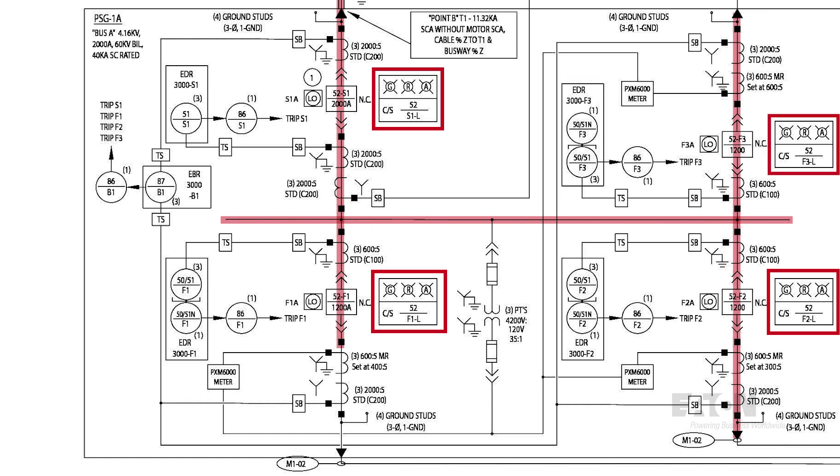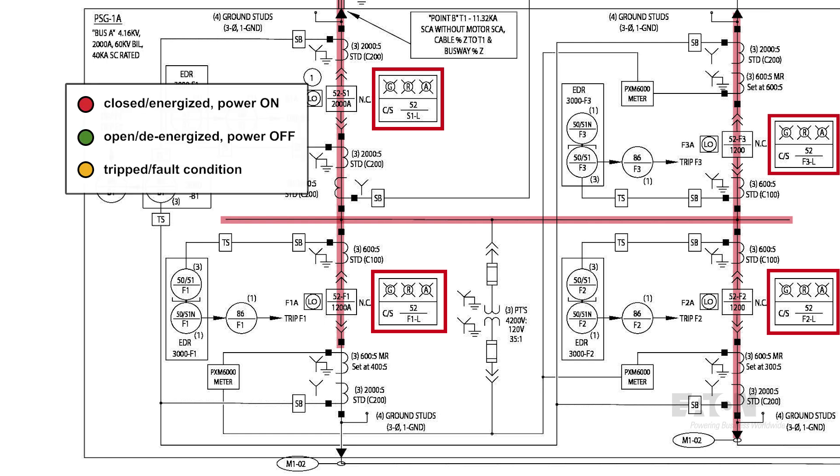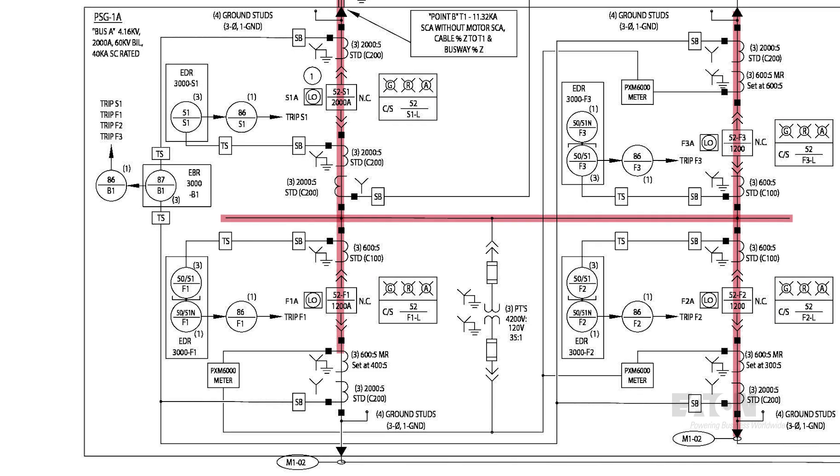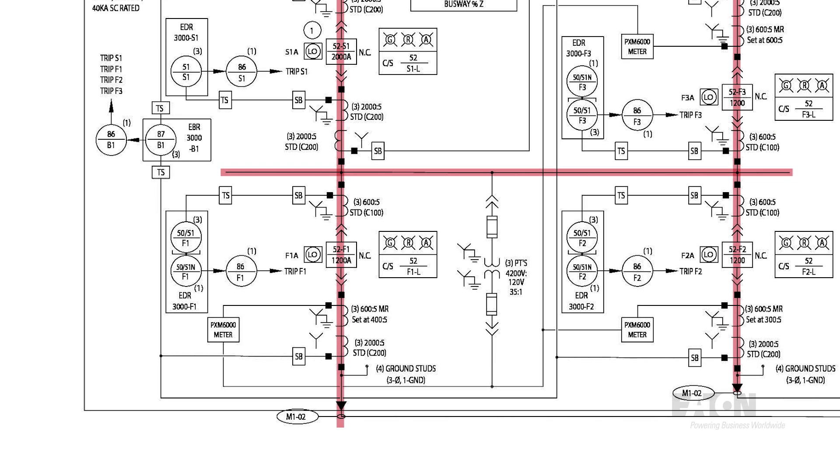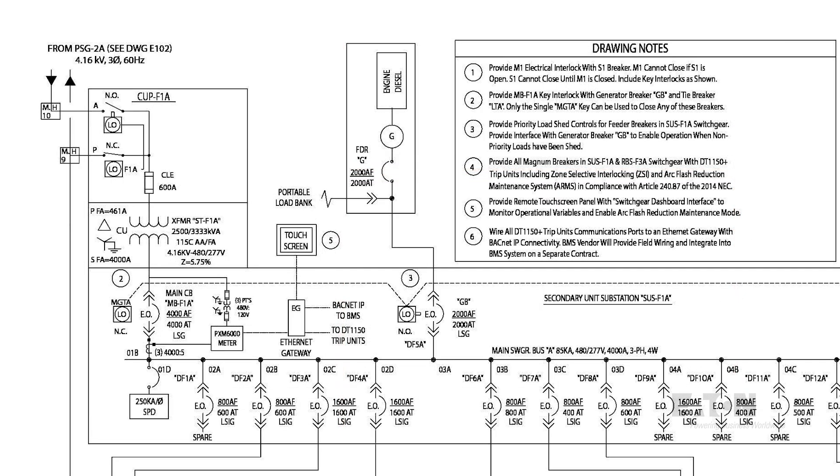Each breaker in the 4160 volt lineup has CTs feeding an EDR3000 relay, a control switch, and red, green, and amber indicating lights. When illuminated, the red light indicates the breaker is closed, the green light indicates the breaker is open, and the amber light indicates the breaker has tripped due to a fault on the system. This is the standard color scheme for power systems. Red means the circuit breaker is closed and power is on, and we need to stop and take caution. This is the opposite of what many may anticipate. Let's keep following the power flow. Feeder M1-02 extends onto the next page.